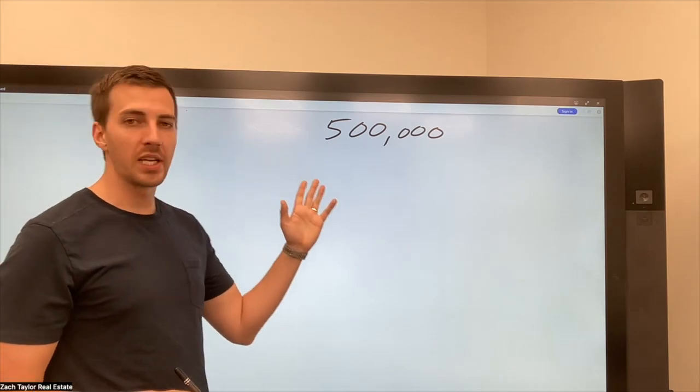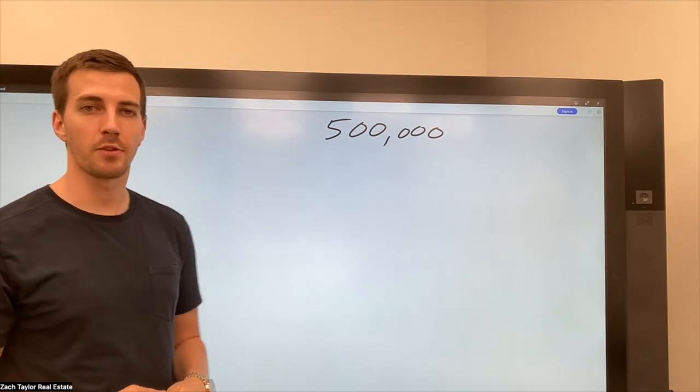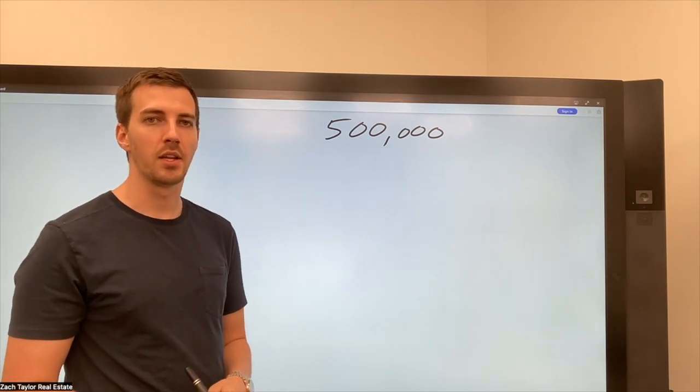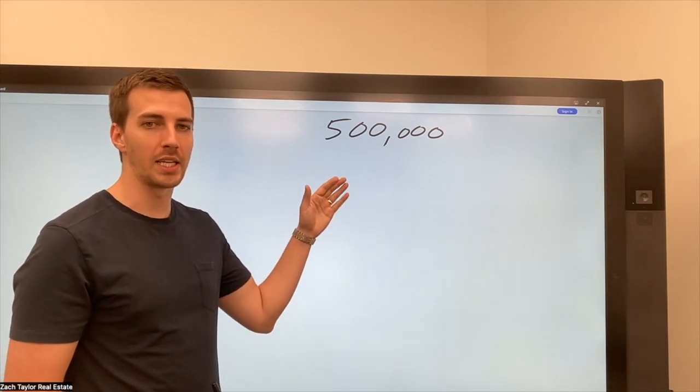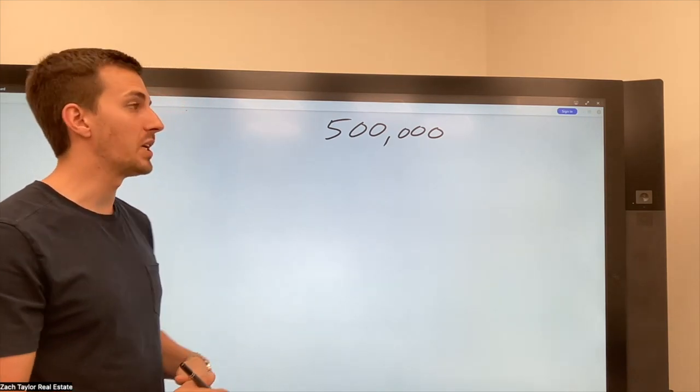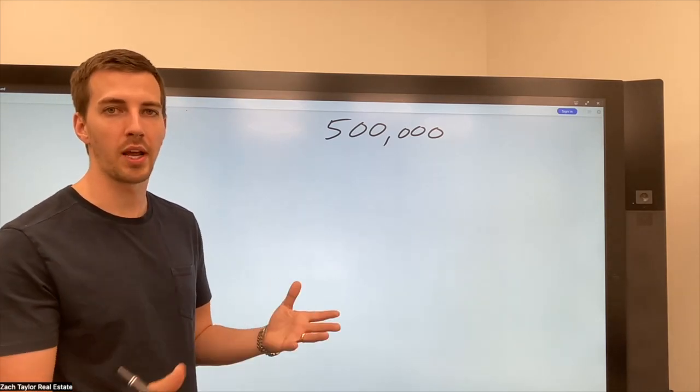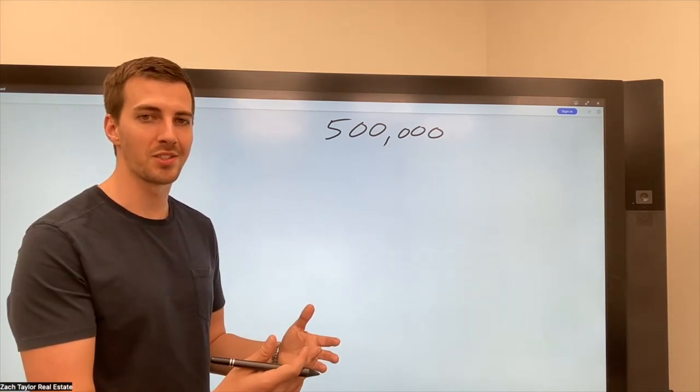So the first thing I like to do when calculating this is obviously commissions. Now we all know these are fully negotiable. There's no standard rate, but I want to calculate in this estimate what I want to negotiate with the seller. So this could be 3%, 4%, 5%, 6%. It could be a flat fee. It could be whatever, but it's what I want to negotiate with the seller.